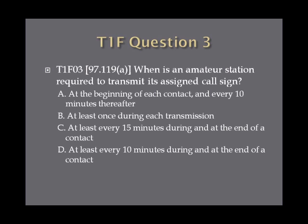Question three. When is an amateur station required to transmit its assigned call sign? A, at the beginning of each contact and every ten minutes thereafter. B, at least once during each transmission. C, at least every 15 minutes during and at the end of a contact. D, at least every ten minutes during and at the end of a contact.